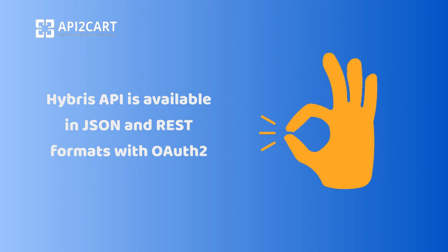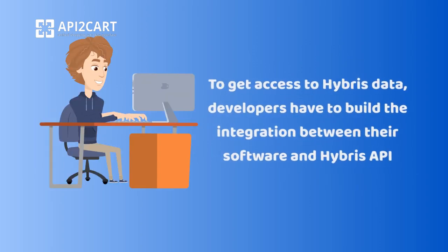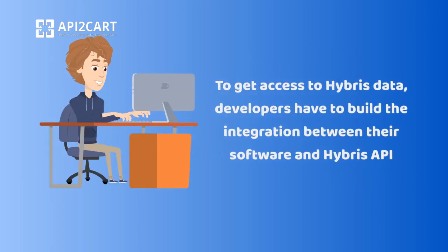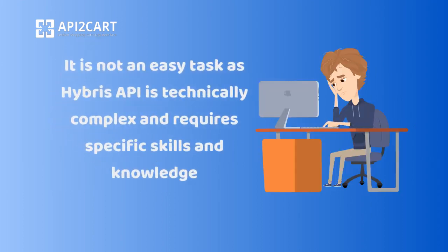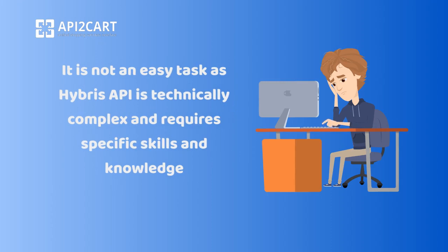Hybris API is available in JSON and REST formats with OAuth 2. To get access to Hybris data, developers have to build the integration between their software and Hybris API. This is not an easy task, as Hybris API is technically complex and requires specific skills and knowledge.